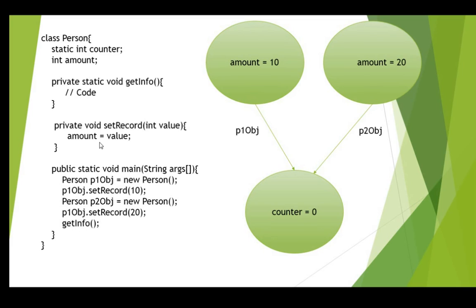If you are accessing a static method in another class — for example, a child class of Person — you use the class name followed by a dot and then the static method name: Person.getInfo(). You can see that counter is a static variable, which is a class variable, and the memory space for this static variable will be shared — object one and object two will share the same variable.